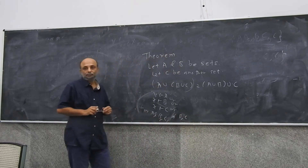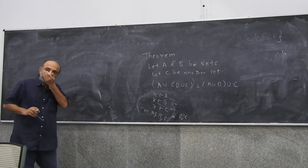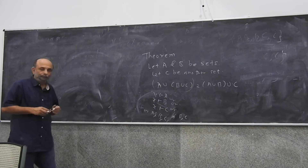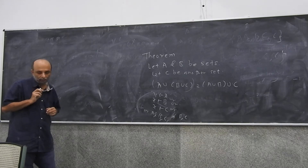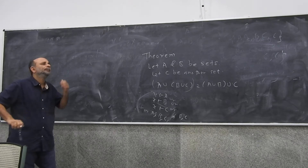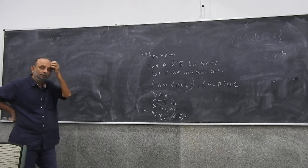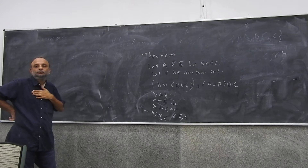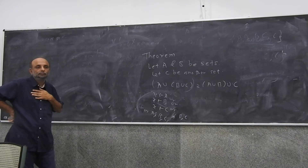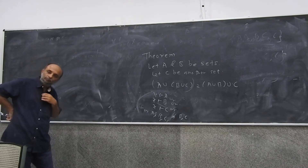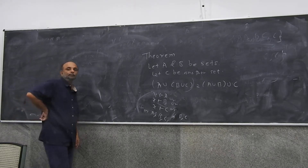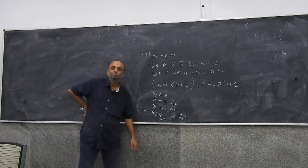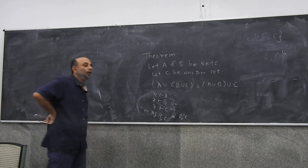Sir, we can maybe start by saying that X is an element that belongs to B union C. Therefore it belongs to B or C or both. And then we can say that if X belongs to A union B union C as well, then it belongs to all three. Then assume that there is a Y which belongs to A union B, and if it belongs to A union B union C, then it belongs to all three as well. Therefore X and Y are similar, and the two sets are equal.